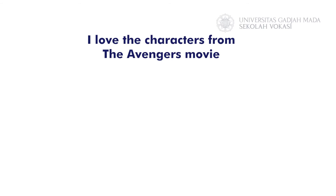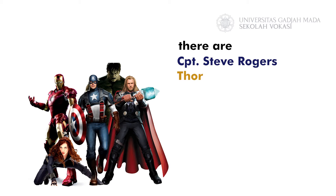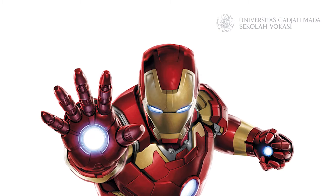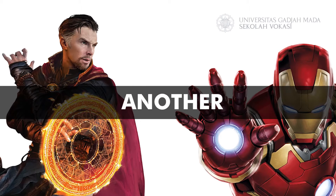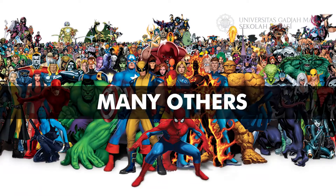Let me give you an example. I love the characters from the Avengers movie. There are Captain Steve Rogers, Thor, Hulk, Groot, and many more. Actually, my favorite character is Iron Man. Another character that I like is Dr. Strange. Well, there are many others that I like, but I can't mention them all here. You see, in those sentences I use two forms of others — the first one is 'another', and then 'others'.